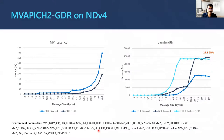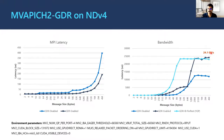For MVAPICH2-GDR on NDV4, we collected two sets of results: GDR disabled and GDR enabled. The latency graph shows a nice improvement with MVAPICH2-GDR. For P2P bandwidth, we get very close to the peak — 24.1 GB/s with MVAPICH2-GDR. The relevant ENV parameters for this experiment are also included.